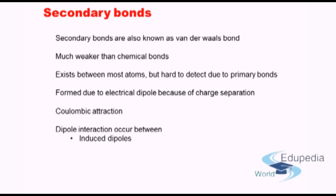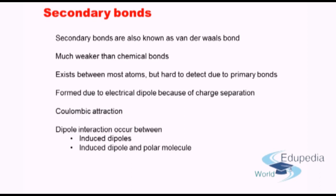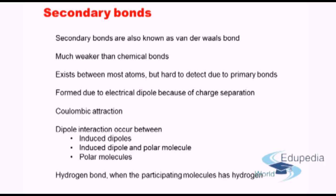Since there is charge separation, there is Coulombic attraction, and that is what causes the secondary bonds. Now, the dipole interaction occurs in three forms: one is induced dipoles, where both atoms which are part of the secondary bond have an induced dipole; the second is one polar molecule inducing a dipole; and finally, two polar molecules interacting.